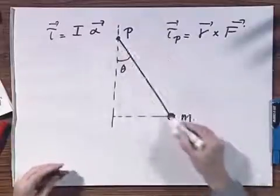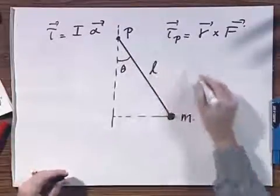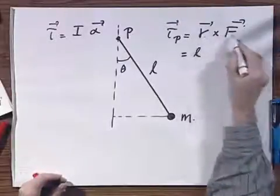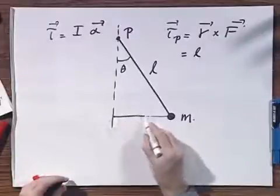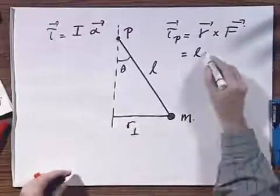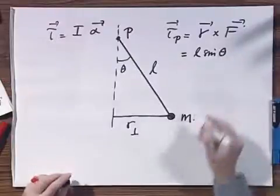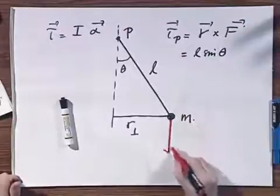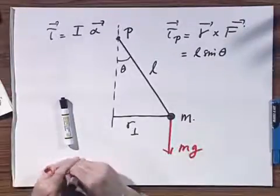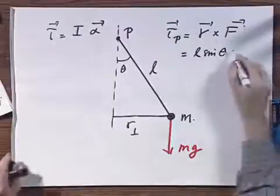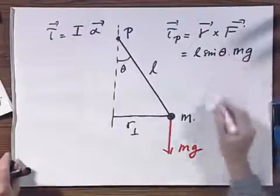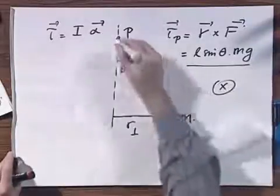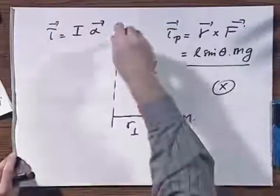What is r? That is this line that has a certain length L. So this is L. But since I have a cross product, I have to take r perpendicular. So it is L sine theta. And I have the force, which is mg. So this is the torque relative to point P. It's the cross product. It is in this case in the paper.